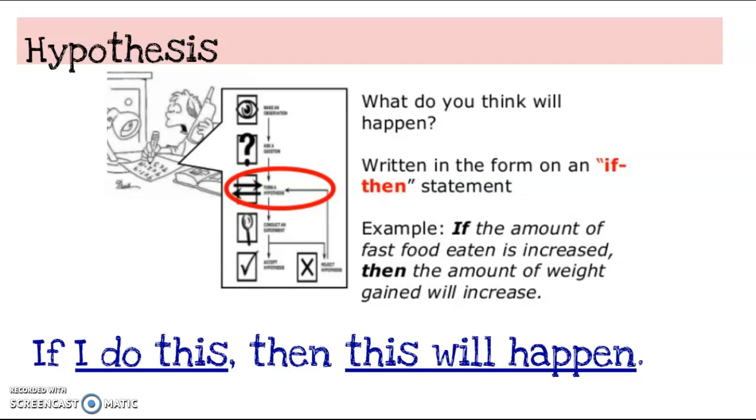So you're going to explain if, and then a little bit about what you're going to do in your experiment, comma, then, and then you explain what you think will happen. So for an example, if the amount of fast food eaten is increased, then the amount of weight gained will increase.